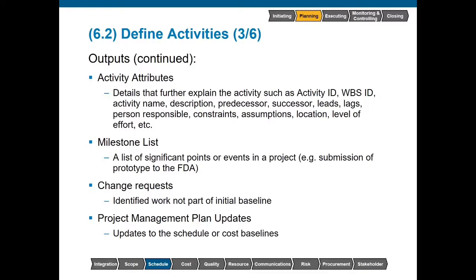A milestone list is a great way to keep stakeholders informed about progress within the project without getting them too deep into the details. If I tell you that we are 42% done with activity 2.4.9, that doesn't mean a whole lot to you unless you are really tracking everything that's going on. If I give you a list of milestones on a glide path, you're able to at a glance visualize exactly where we're at versus where we should be. The important concept of milestones is that these are not activities — there's no work being done, so they do not have a duration.